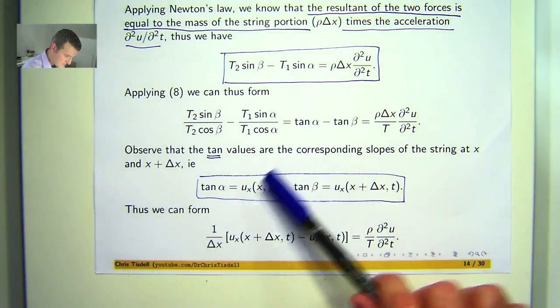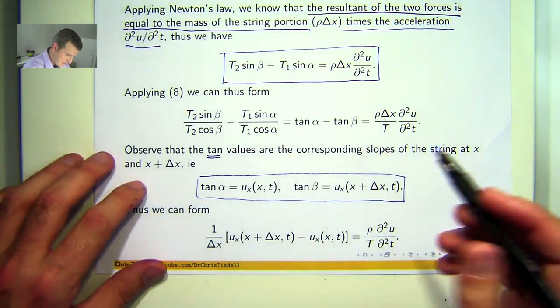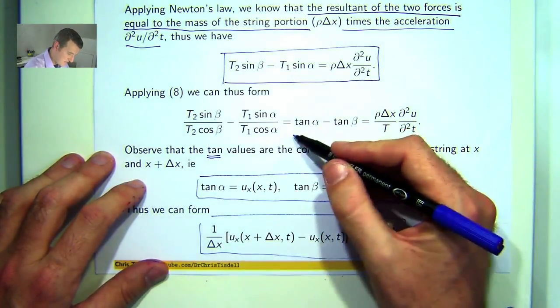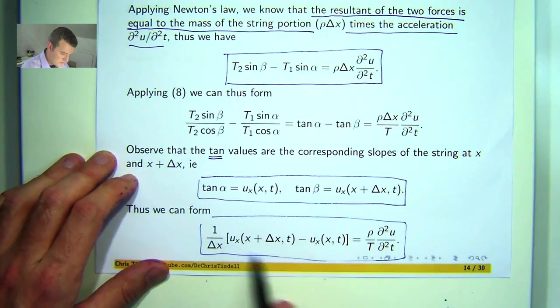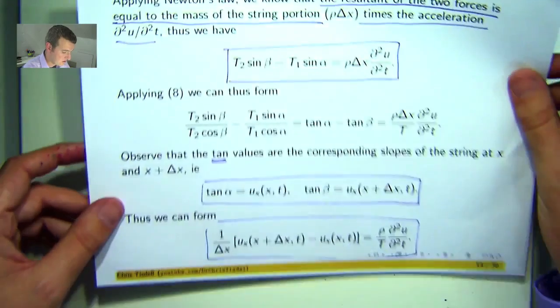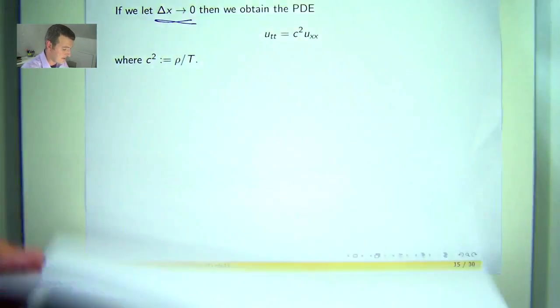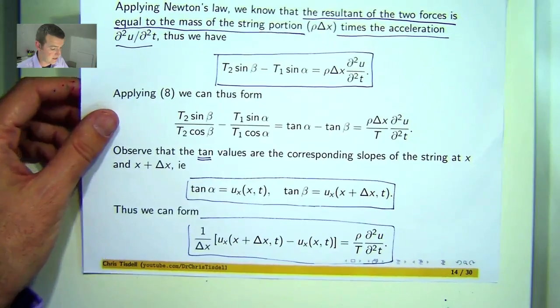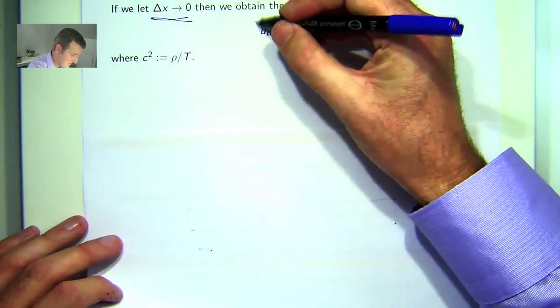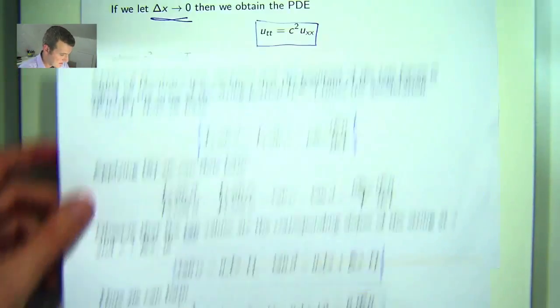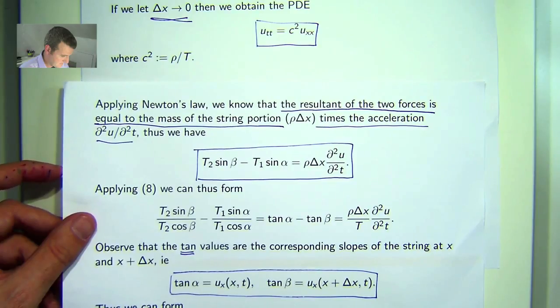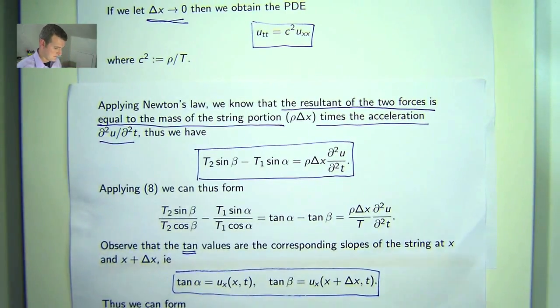What we can do now is replace these with these derivatives. Move the delta x over here. And what do I have here? I've almost got a second order derivative. In fact, if I let the delta x go to zero, this will become the second order derivative of u with respect to x.